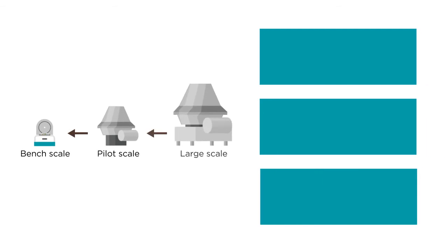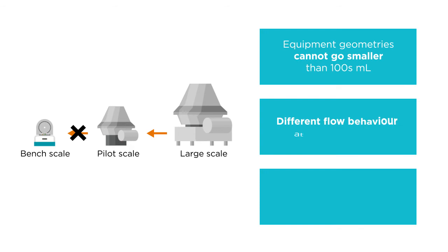However, traditional methods are not applicable for other unit operations, particularly in downstream processes. For example, some equipment geometries cannot go smaller than hundreds of milliliters. Flow behavior is different at very small scale. The process environment is known to be inconsistent between scales.